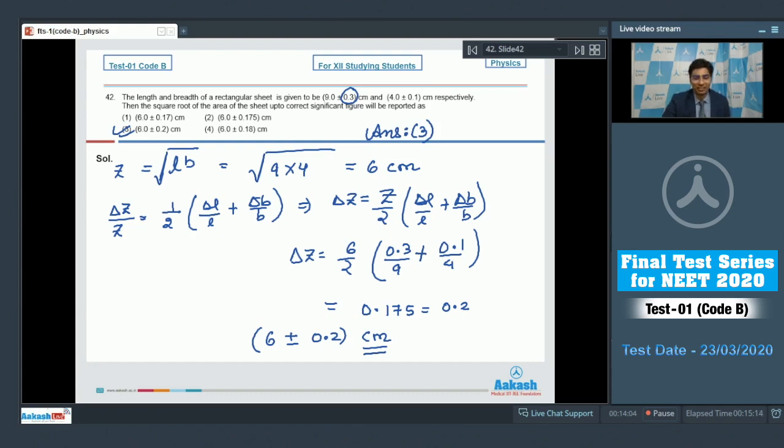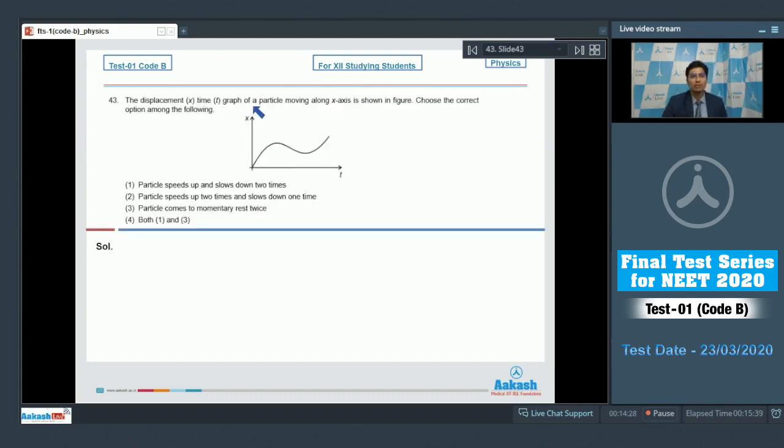Now let us move to question number 43. Question 43 says the displacement time graph of a particle moving on the x axis is shown in the figure. Choose the correct option among the following. Dear students, among the given options the correct answer is option number 4.